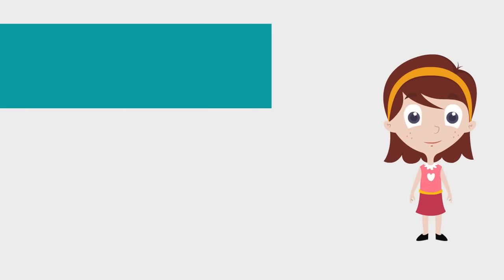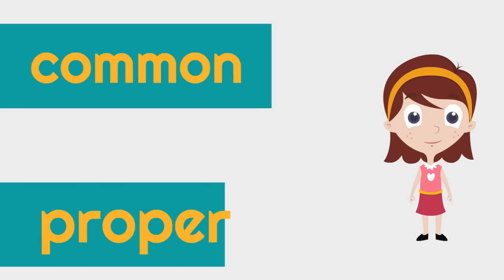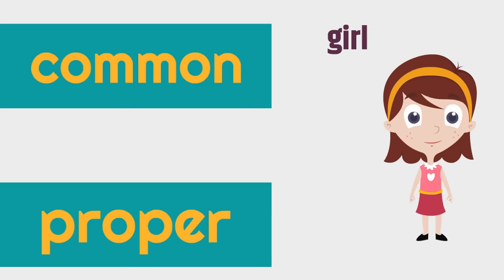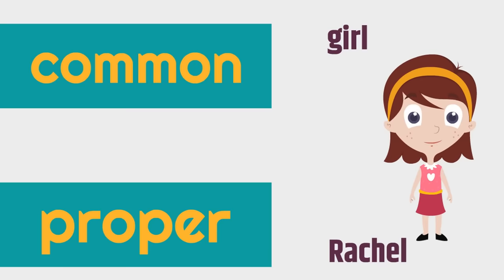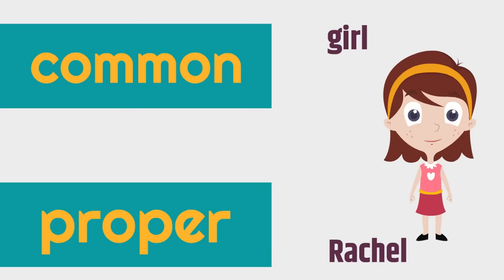Here is another example. Here is a girl. Girl would be the common noun because a common noun is a type of person, place, or thing. But this girl's name is Rachel. Rachel would be the proper noun because it's a specific person, place, or thing. So the common noun is girl. The proper noun is Rachel.